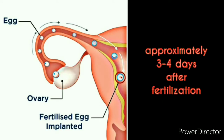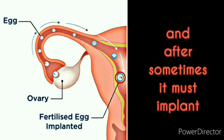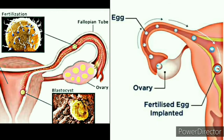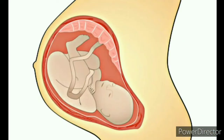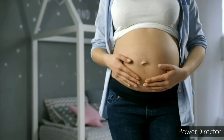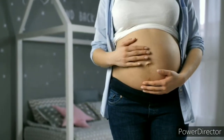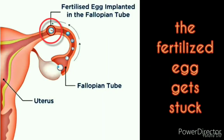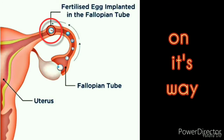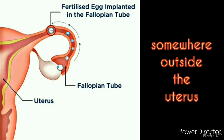After some time, the fertilized egg must implant in the lining of the uterus, or in the endometrium, for further development of the embryo and over time for the development of the fetus. This is very important for a normal pregnancy. Ectopic pregnancy occurs when the fertilized egg gets stuck on its way and starts to develop somewhere outside the uterus.